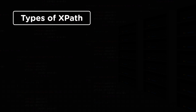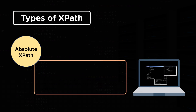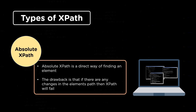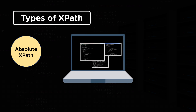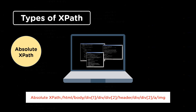There are basically two types of XPath: Absolute XPath and Relative XPath. Absolute XPath refers to the direct way of finding an element. The major drawback of absolute XPath is that if there are any changes in the element's path, then the XPath will fail. The XPath begins with a single forward slash, which states that we can select the root node element. The syntax of absolute XPath looks something like this. You can determine the absolute XPath of any Windows file by right-clicking on the file, clicking Properties, looking at the location, then adding a backslash and the file name to the end of the path.